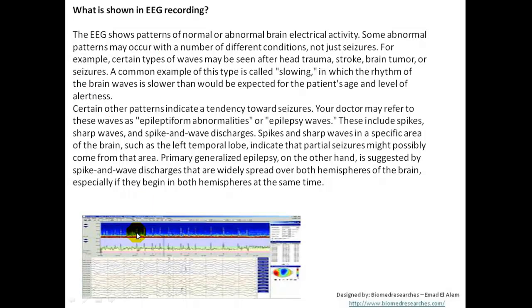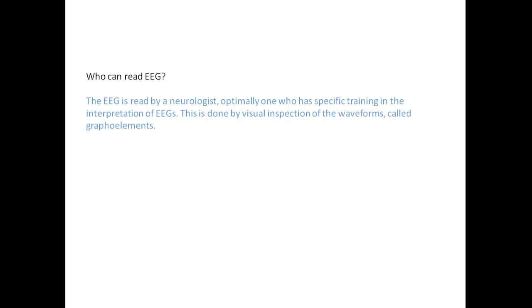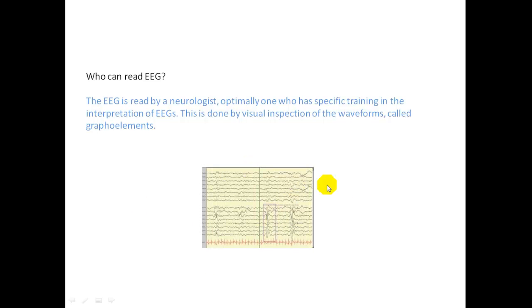This is an example of an EEG test, as we can see here. We will go into details in our next episode on this and have more ideas about them. So now, who can read the EEG? If you remember in our last episode, we talked about neuroscience, neurophysiology, clinical neurophysiology, and neurology. The reason behind explaining these sciences was to give you a foundation towards understanding who is responsible for reading, diagnosing, and interpreting the EEG signals. The EEG is read by a neurologist — optimally one who has specific training in the interpretation of EEG. Not all neurologists are able to read EEGs unless they have training in EEG interpretation. This is done by visual inspection — the neurologist looks at the EEG recording, looks at the waveforms, and decides if the patient is normal or abnormal. Here is another example of an EEG showing some abnormal waves.